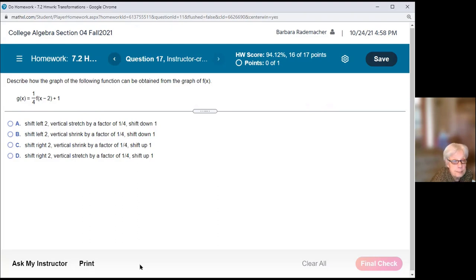Okay. Now finally. Describe how the graph of the following function can be obtained from the graph of f of x. Well, f of x has endured a horizontal shift to the right 2 units. A vertical shrink by a factor of one fourth. And a vertical shift up 1. So let's see. Shift to the left? No. A and B both say shift to the left. No. Now, C and D both say shift to the right.